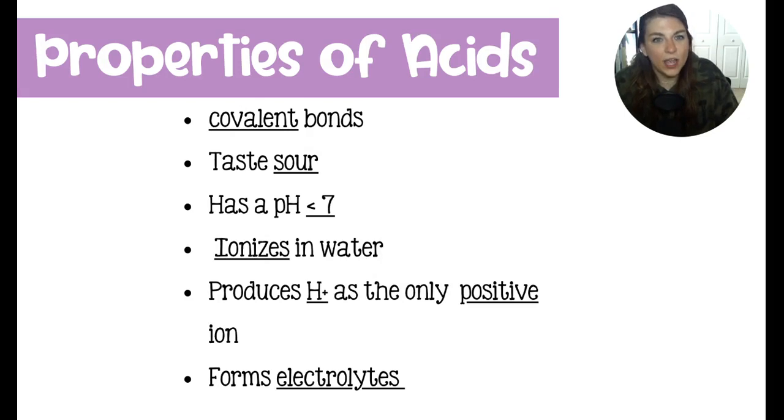Acids, on the other hand, have covalent bonds. They taste sour. If you've ever had any citrus fruit, lemons, or limes, those are acidic. They have a pH value less than seven. They are ionized in water. So that's just the language, vocabulary thing. It is going to produce H+ as the only positive ion, which then will go on to bond with water and make hydronium, H3O+. And acids will also form electrolytes.